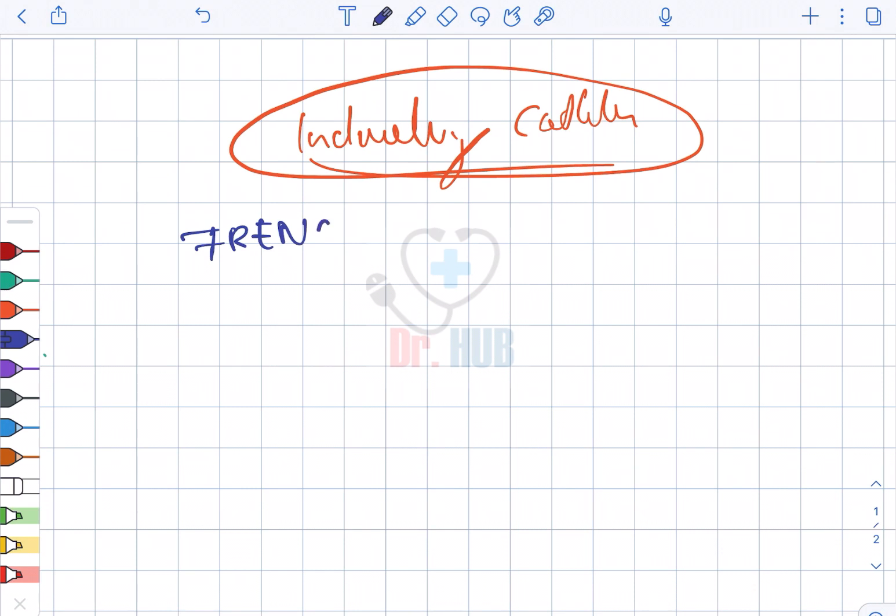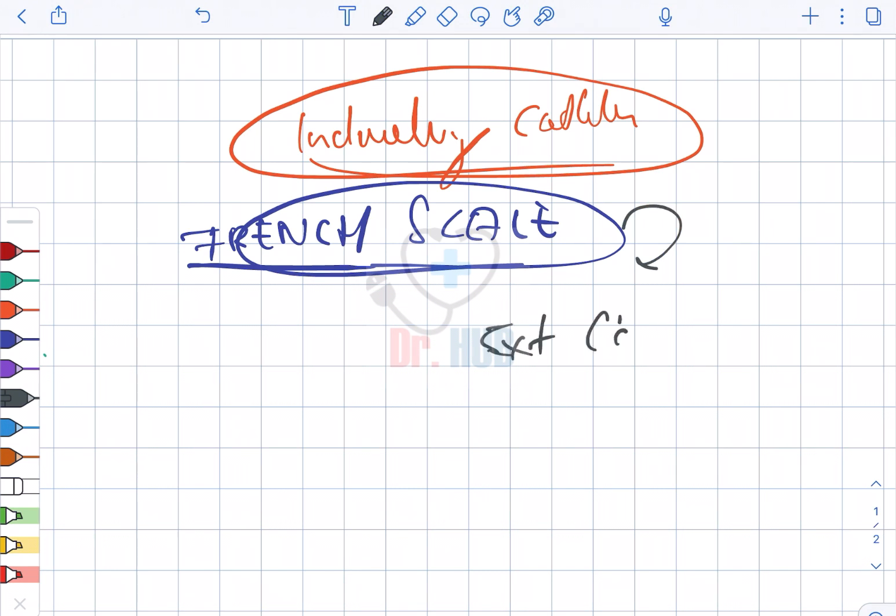Next, another important point is to know that it uses a French scale. So the French scale is used in the measurement and it corresponds to the external circumference. This external circumference is in millimeters.